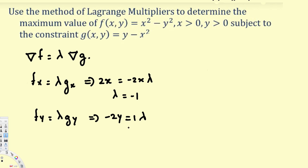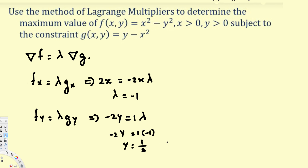From this equation we can solve for y because we already know lambda equals negative 1. Plugging in: negative 2y equals 1 times negative 1, so negative 2y equals negative 1, and therefore y equals 1/2.